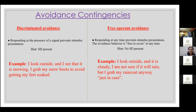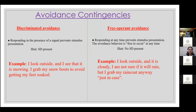Within avoidance contingency, we have discriminated avoidance: responding in the presence of a signal prevents stimulus presentation. The key hint is that an SD is present. Example: I look outside and see it is snowing, so I grab my snow boots to avoid getting my feet soaked. Free operant avoidance: responding at any time prevents stimulus presentation; the avoidance behavior is free to occur at any time with no SD present. Example: I look outside and it's cloudy; I'm not sure if it will rain, but I grab my raincoat anyway, just in case.